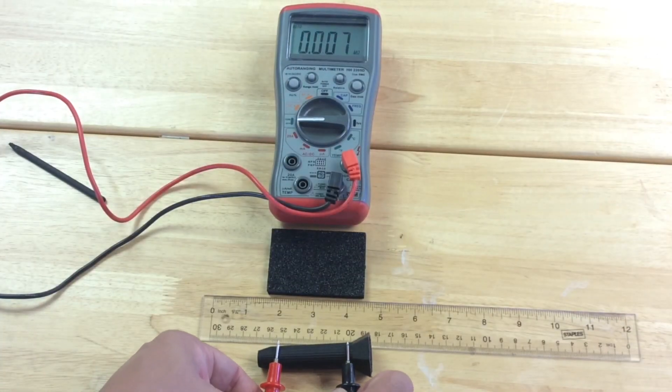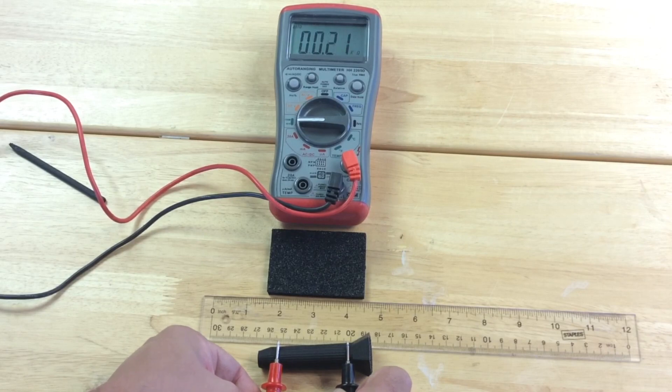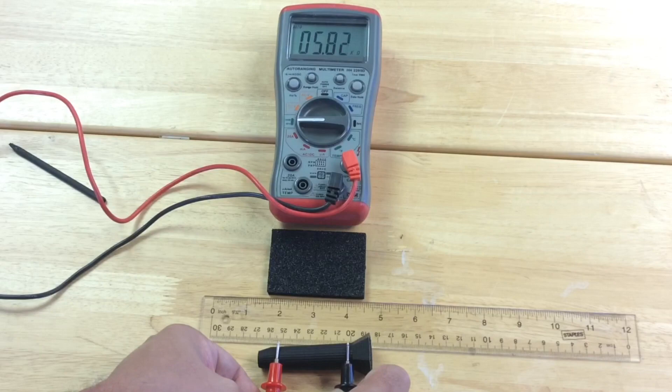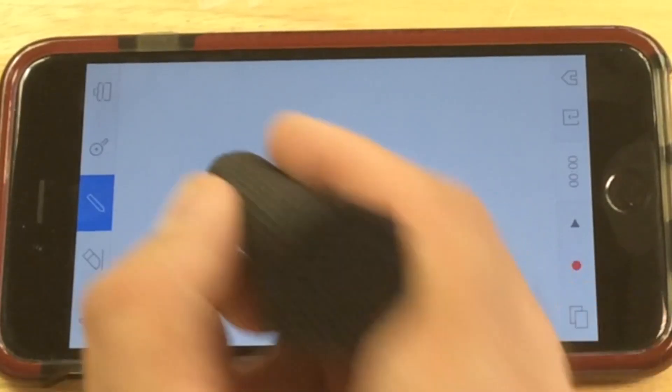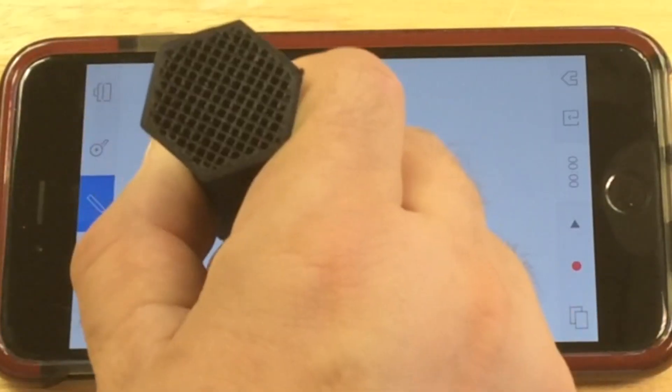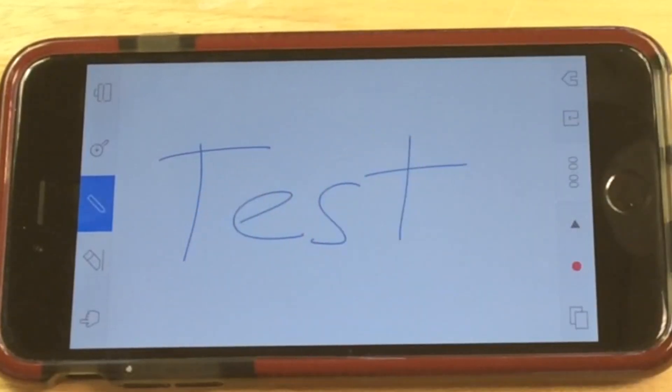So I went back to the meter expecting to see the same kind of measurements and because this thing was thicker I had better conductivity. Just about the same as the conductive foam. So then I went to the iPhone and tried it out. I found I had to keep it up straight so it needed that surface area but it worked great.